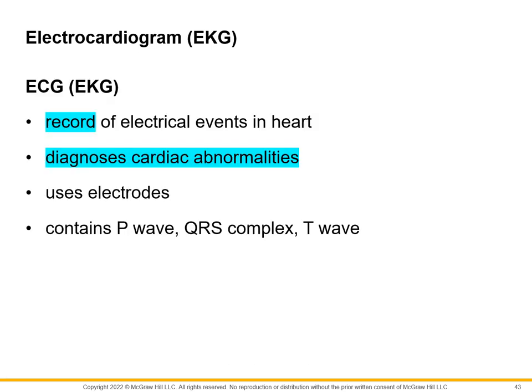The electrocardiogram — otherwise referred to as the EKG or ECG — records the electrical events in the heart. The action potentials passing through the various nodes and fibers are observed through the ECG, which is able to diagnose cardiac abnormalities. If there is something wrong with the conduction and movement of the heart, we can find that out with the electrocardiogram.